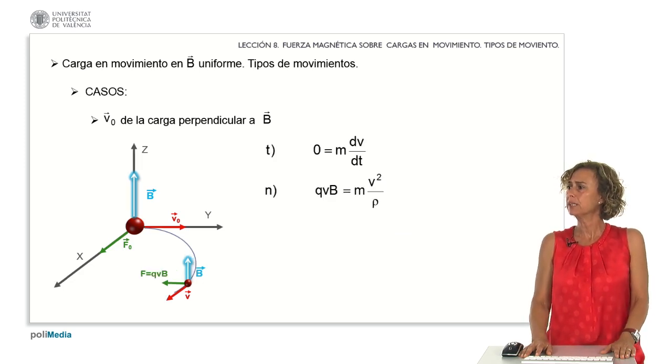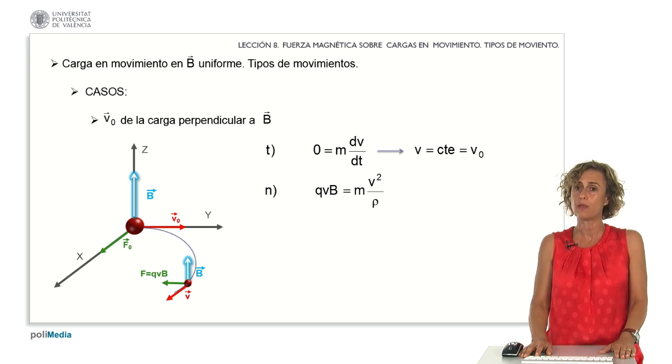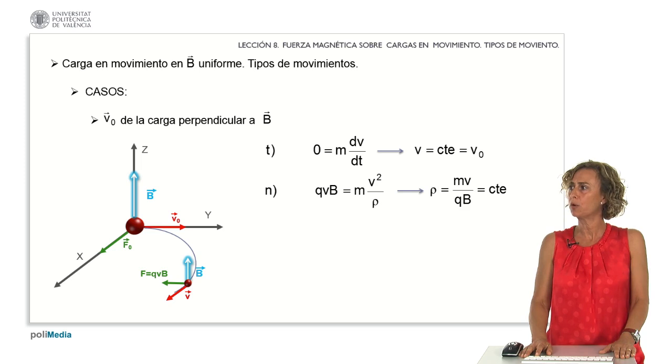From these two equations, let's examine the implications. The first equation suggests that if the derivative of the velocity magnitude concerning time equals zero, the velocity magnitude remains constant and equals v sub zero, which represents the initial velocity of the charge. From the second equation, if we isolate rho, it equates to the mass multiplied by velocity divided by the product of charge and magnetic field.